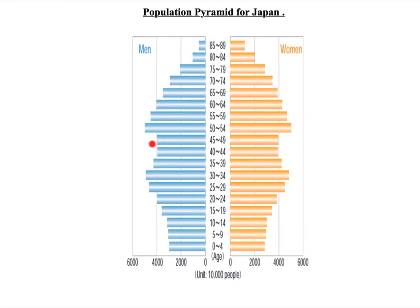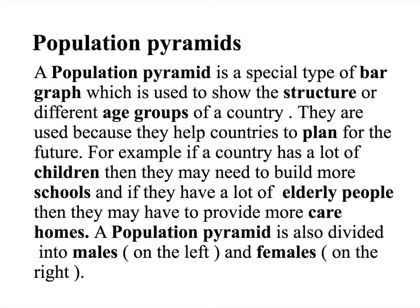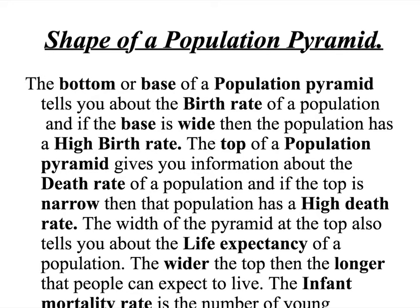Japan is another developed country with that bell shape, indicating fewer children due to the economic cost of having kids. The shape of a pyramid tells us about birth rate and death rate. If it has a wide base, it shows a high birth rate with lots of young people being born. If the top is very thin, a lot of people are dying. Conversely, if the base is very thin, there are not many people being born. And if the 85 to 100 section is really wide, it means not many people are dying — which links into healthcare.